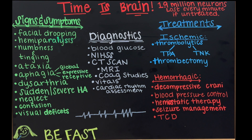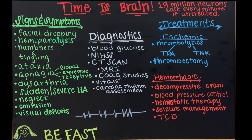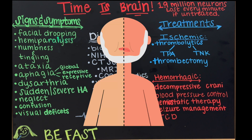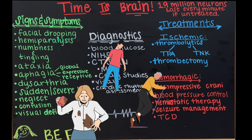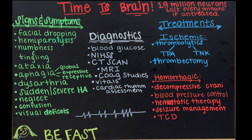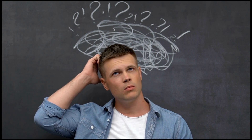Signs and symptoms of stroke: facial drooping is a classic sign — one side of the face looks dropped or drooping to the side. Next is hemiparalysis, meaning paralysis or weakness on one side of the body — left or right — which is where the term 'hemi' comes from. Numbness and tingling can occur anywhere: extremities, face, left or right side. Ataxia is loss of coordination or muscle control. Aphasia relates to the patient's ability to speak, understand, or express human language.